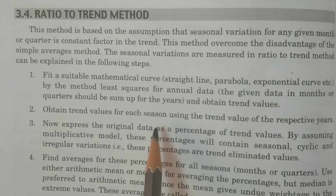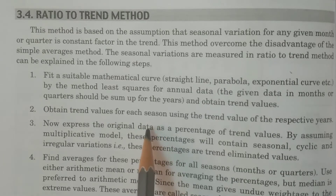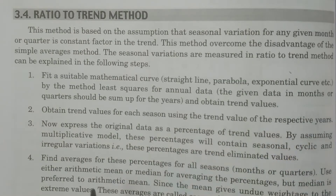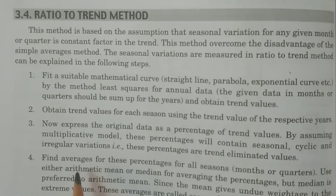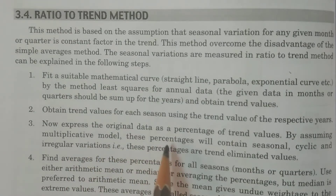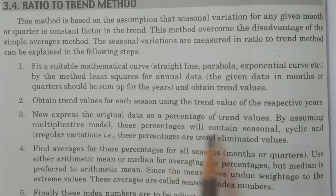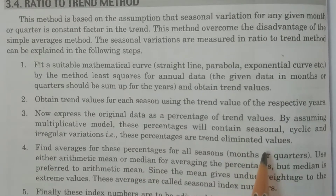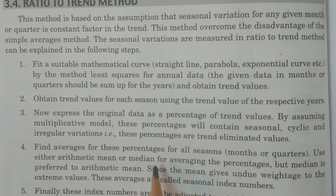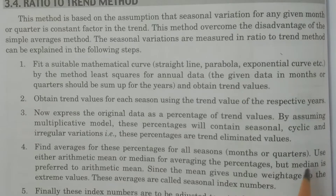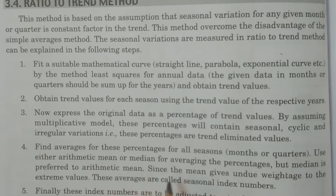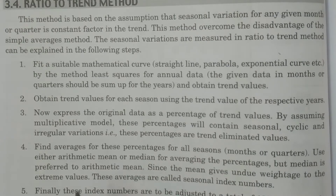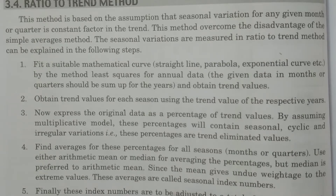Secondly, obtain trend values for each season — either monthly or quarterly — by taking the respective years. Then we have to express the original data as a percentage of trend values, which are called trend-eliminated values. Find the average of these percentages for all seasons, monthly or quarterly, using arithmetic mean or median. Arithmetic mean is the most frequently used measure.